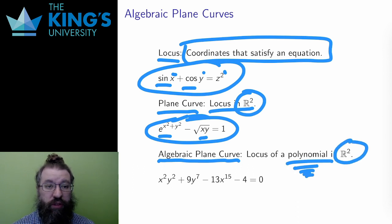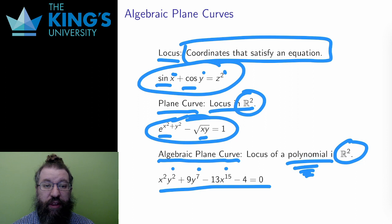For a polynomial, I can only use positive whole number exponents of x and y, and then I can multiply by coefficients and add up the terms. This is a polynomial of four terms, and with the equation of this equals zero, it gives me a locus, which is an algebraic plane curve.